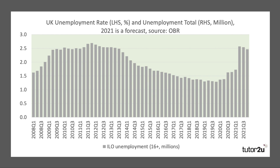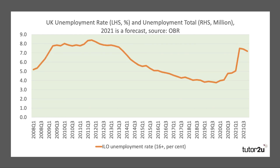By the end of the year, unemployment could be around 7% of the labor force, with sectors such as hospitality, manufacturing, retail, and transport all still struggling and shedding many thousands of jobs. The government has also said it will unwind the furlough scheme at some point, which could act as a catalyst for hundreds of thousands of jobs to go, pushing the unemployment rate well above 7%.